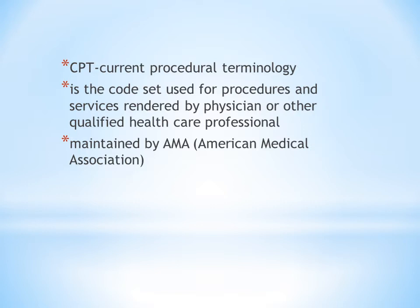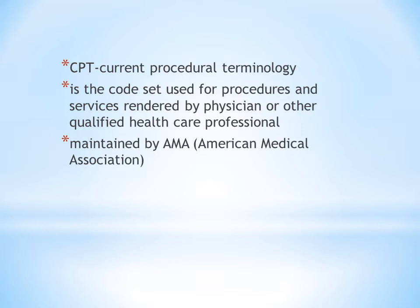CPT codes are maintained by AMA — American Medical Association. ICD codes, on the other hand, are maintained by WHO — World Health Organization. Each CPT procedure or service is identified by a five-digit code. In ICD it was alphanumeric with a minimum of three characters and a maximum of seven, but in CPT it is always a five-digit code.